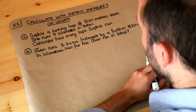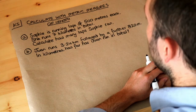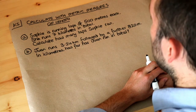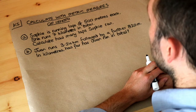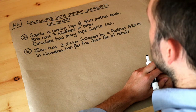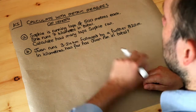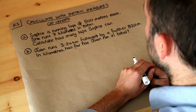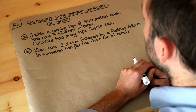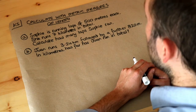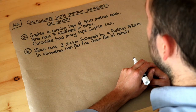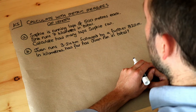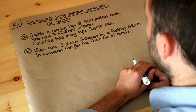Hello and welcome to this Dr Roster-Math's key skill video on calculating with metric measures of length. Let's read this first problem. Sophie is running laps of 500 metres each. She runs seven kilometres in total. Calculate how many laps Sophie ran.